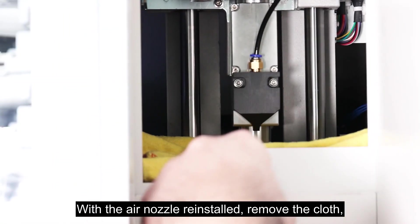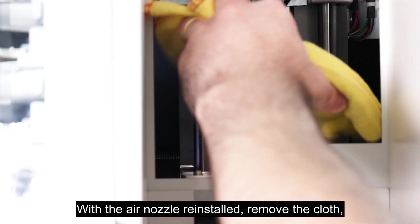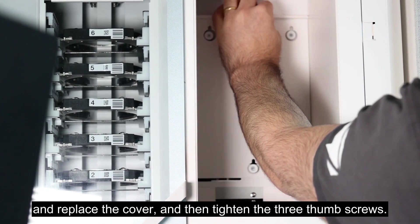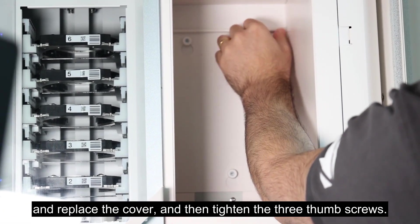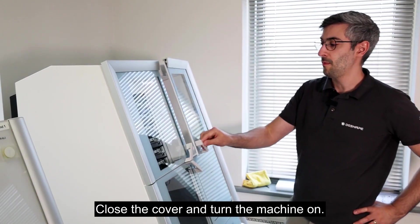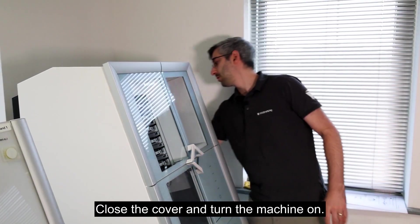With the end nozzle reinstalled, remove the cloth and replace the cover and then tighten the three thumb screws. Close the cover and turn the machine on.